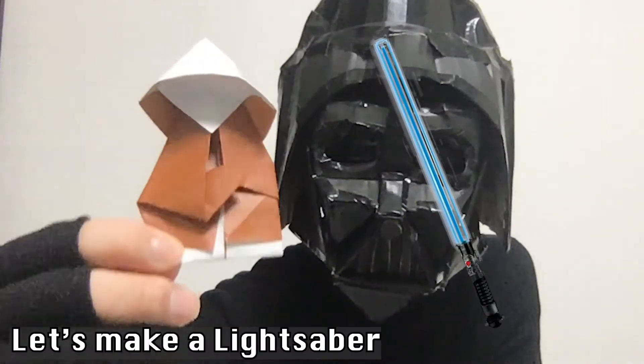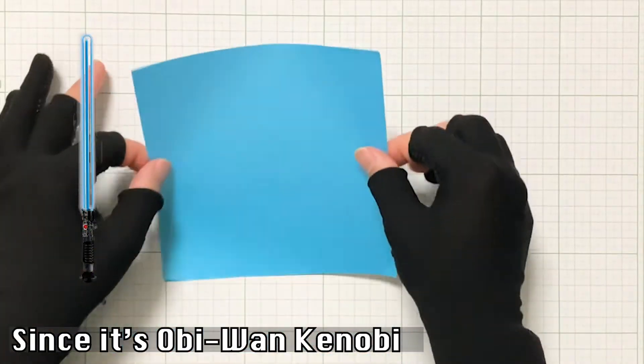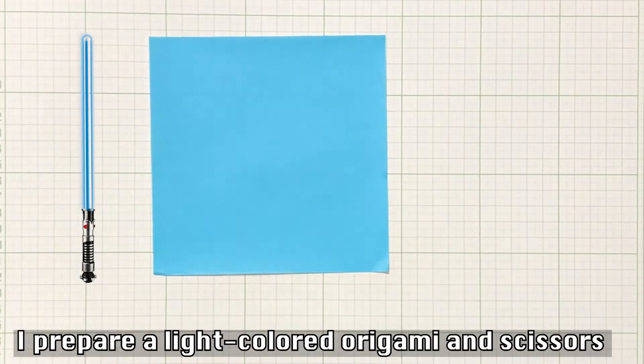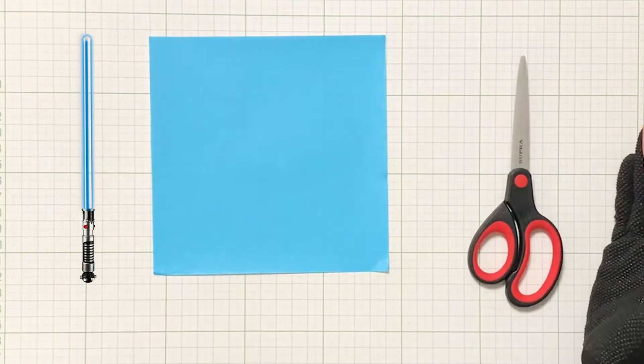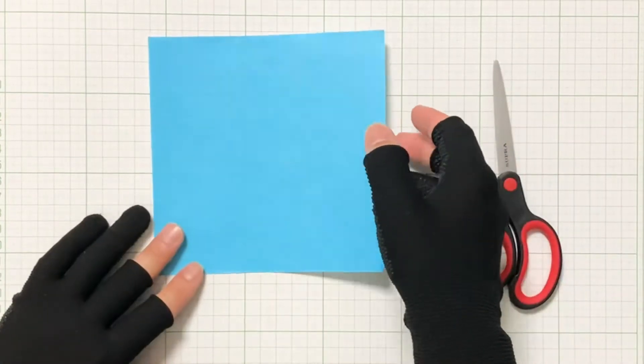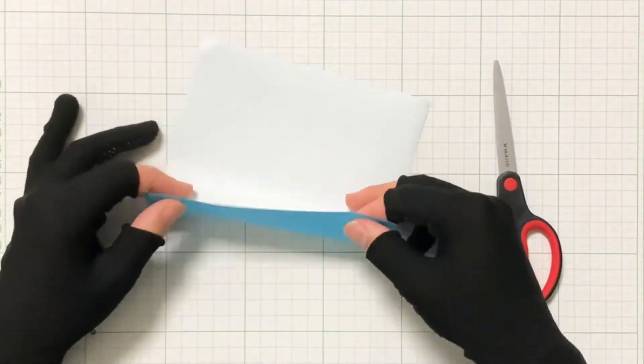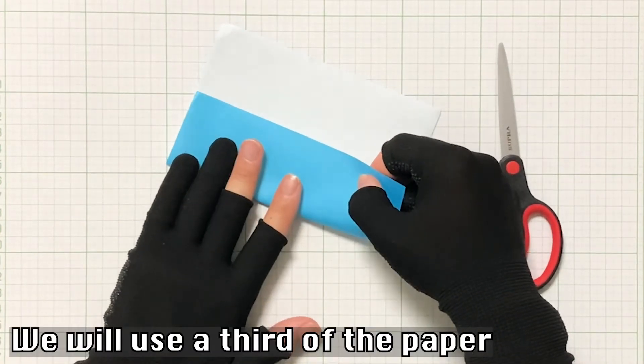Now, let's make a lightsaber. Since it's Obi-Wan Kenobi, I prepare light-colored origami and scissors this time. We will use a quarter of the paper.